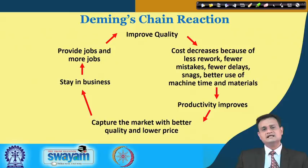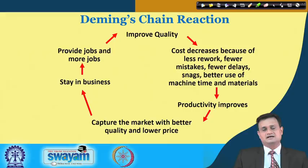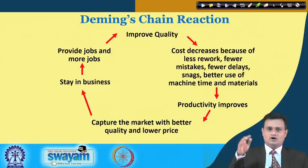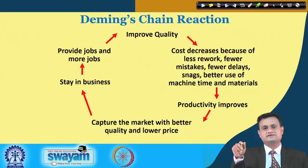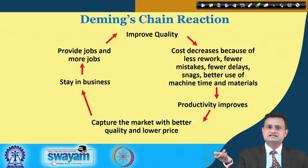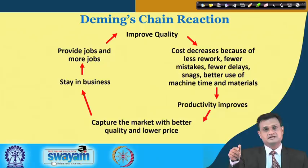One of Deming's important contributions is Deming's chain reaction. If you improve quality, costs decrease because of less rework, fewer mistakes, fewer delays, and better use of machines, time, and materials. This results in productivity improvement, and you capture the market with better quality and lower price. You offer better quality at lower price, improving your competitiveness compared to other players in the market.